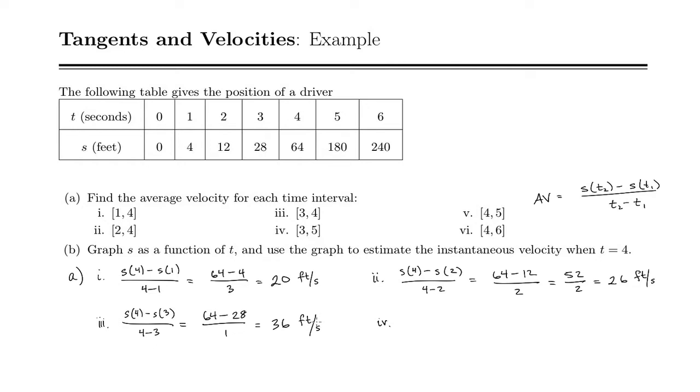For 4, we have between 3 and 5. So s of 5 minus s of 3 over 5 minus 3. So s of 5 is 180 minus s of 3 is 28 divided by 2. So this is 152 divided by 2, which is 76 feet per second.